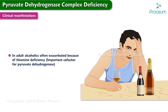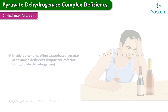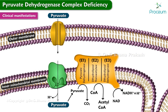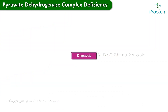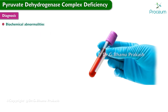In adults who are alcoholics, the condition is often exacerbated because of a thiamine deficiency, which is an important cofactor for the pyruvate dehydrogenase complex. The pyruvate dehydrogenase complex contains three enzymes identified as E1, E2, and E3. The E1 enzyme contains subunits identified as alpha and beta. The most common form of PDCD is caused by an abnormal gene in the E1 alpha subunit, with an abnormality in the PDHA1 gene located on the X chromosome.